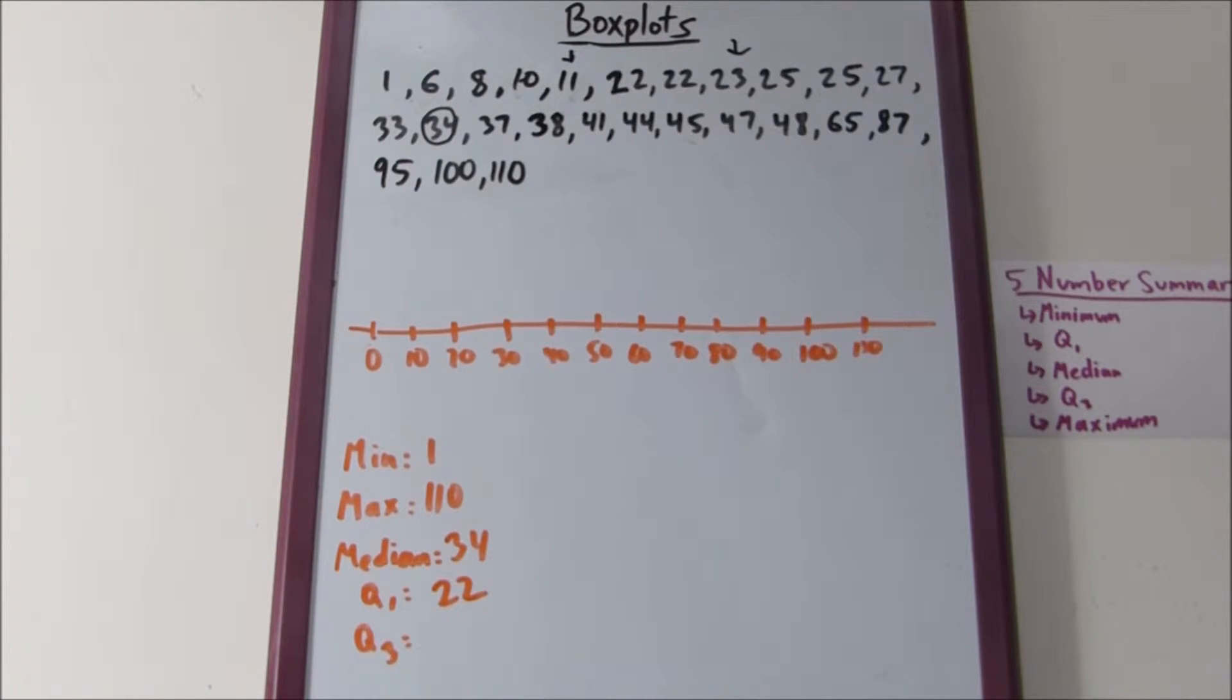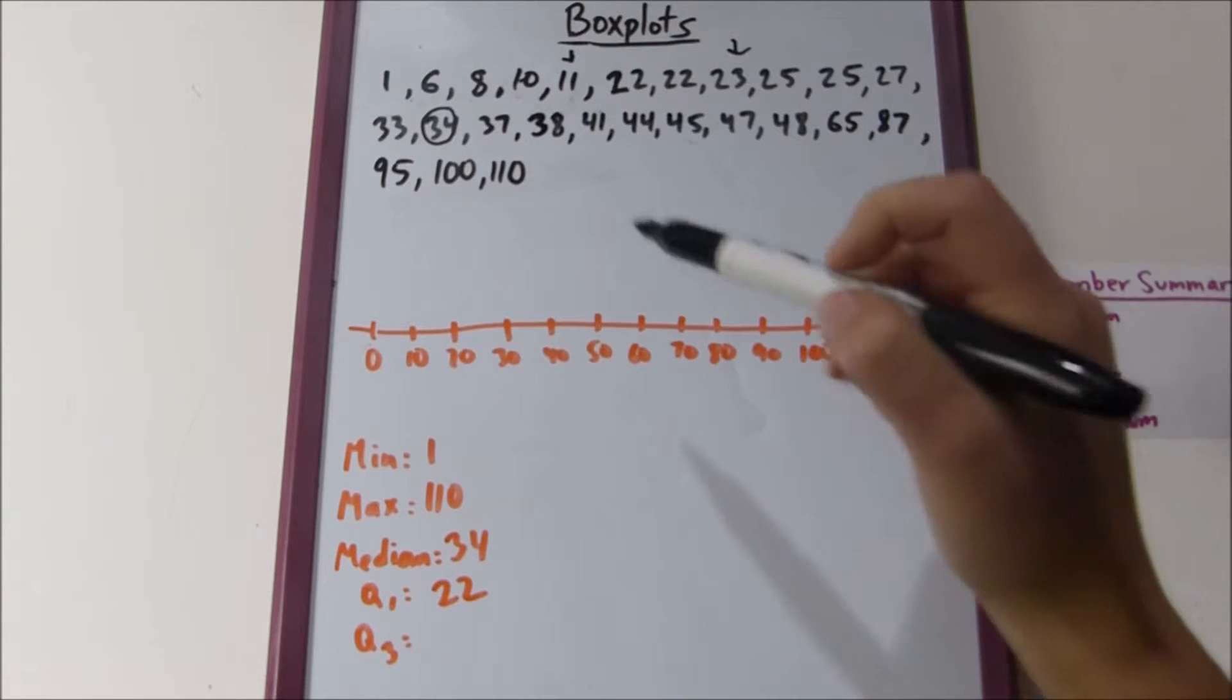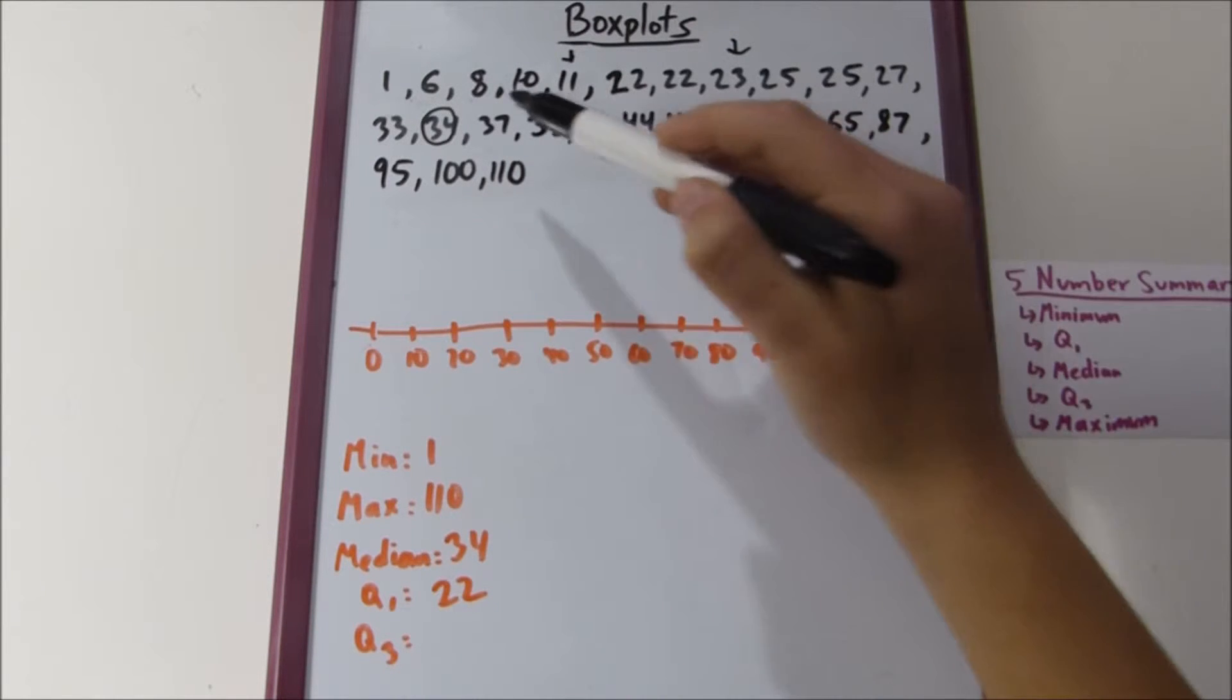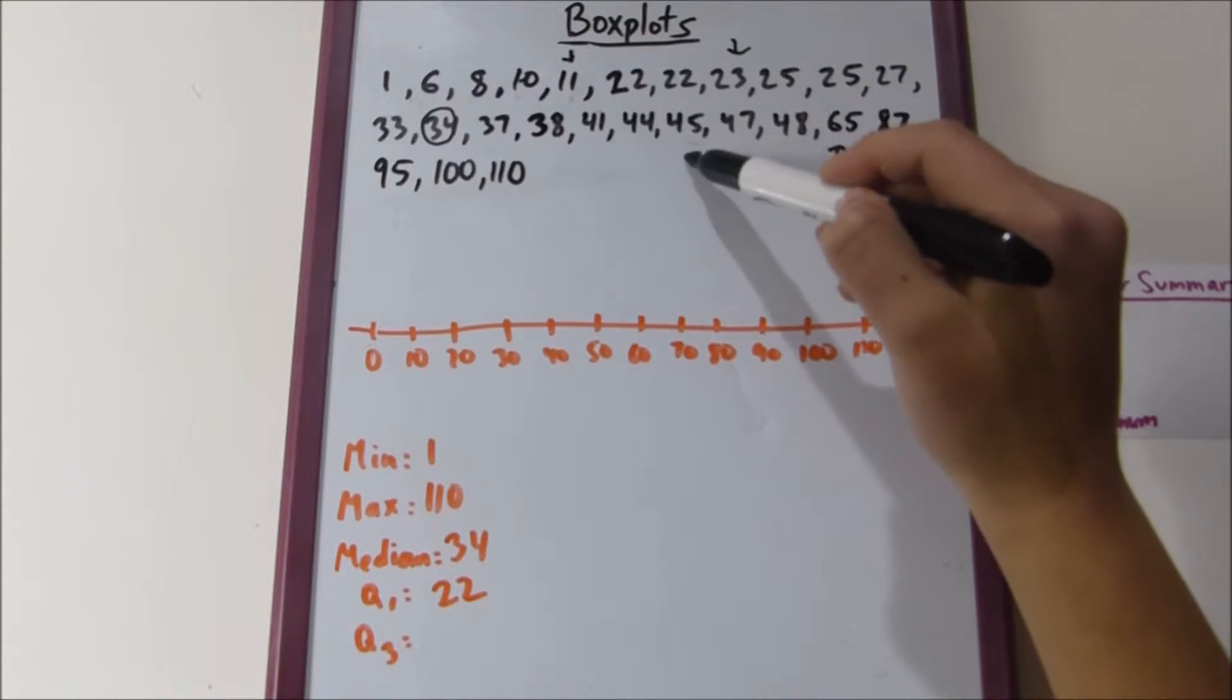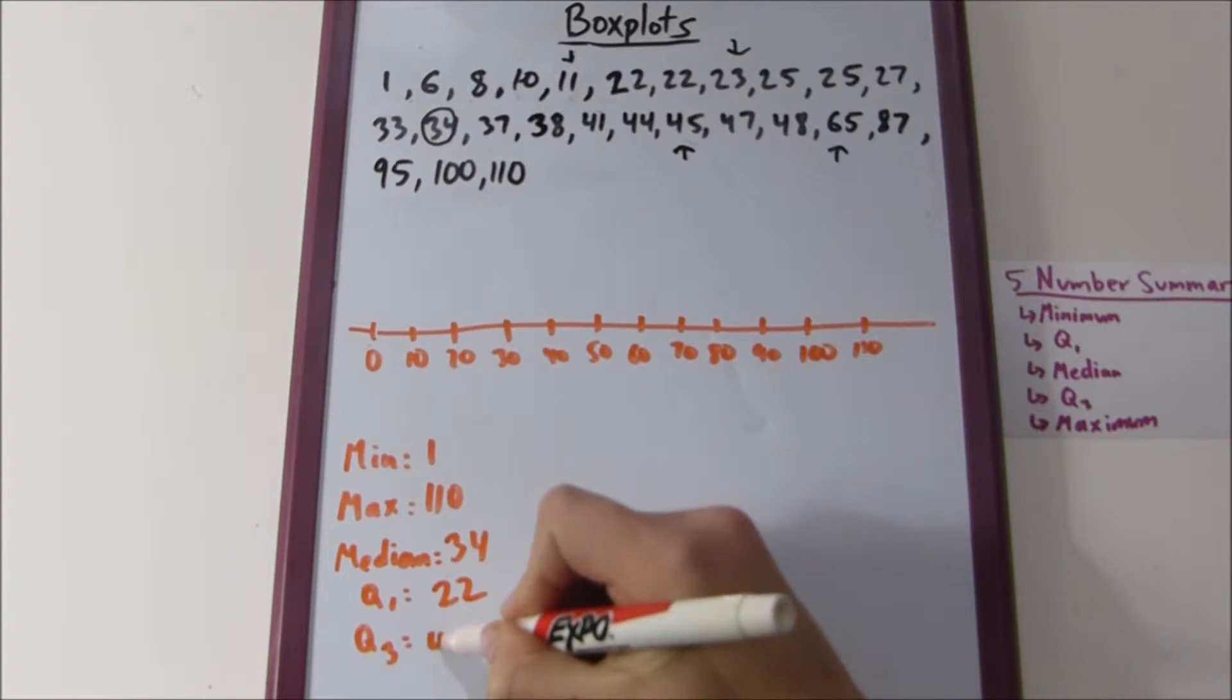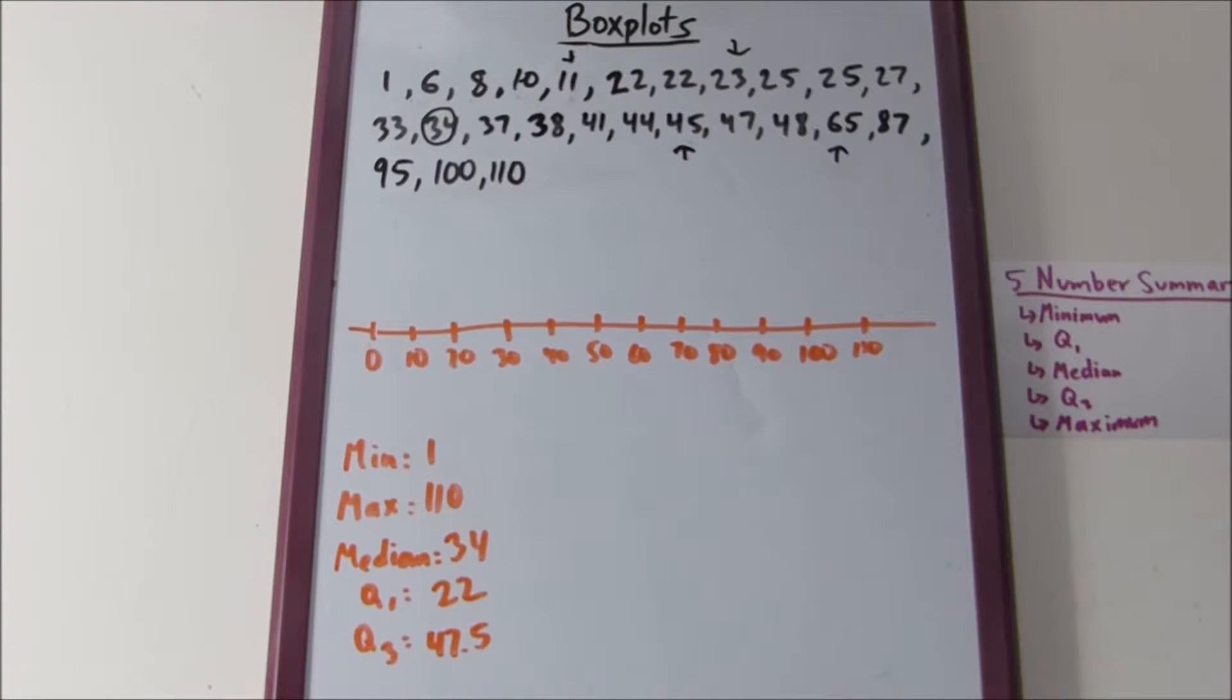Now, let's do the same thing for quartile three. Count off five. One, two, three, four, five, this number. One, two, three, four, five, that number. So, we're left between forty-seven and forty-eight. So, quartile three should be forty-seven point five. Cool. So, now we've got our five numbers summary.